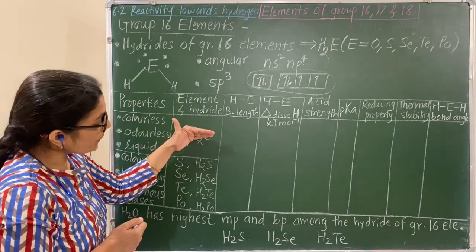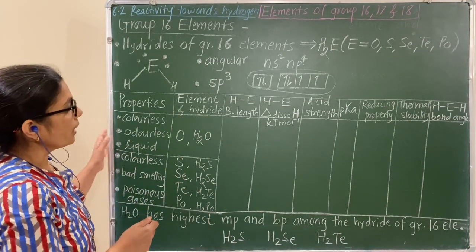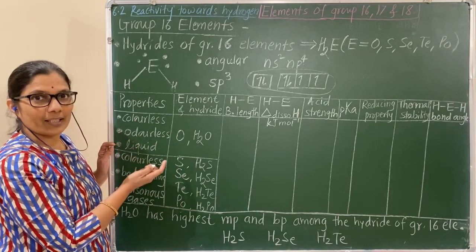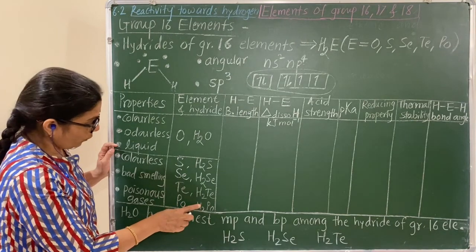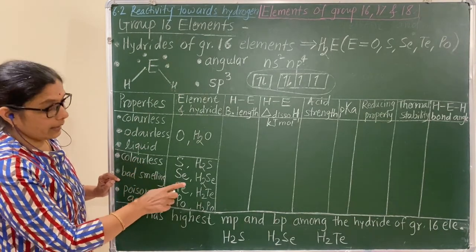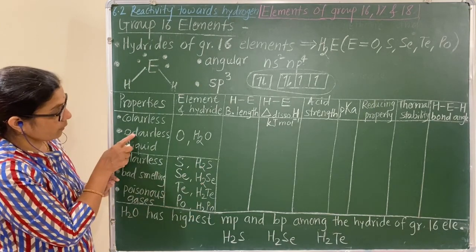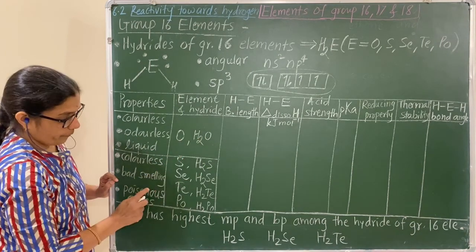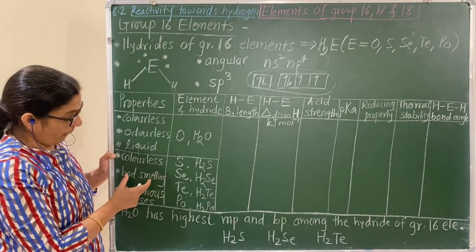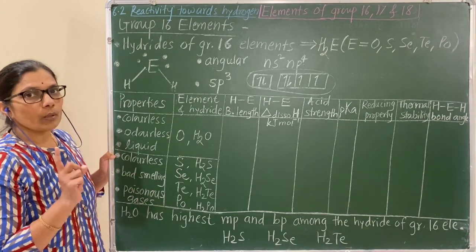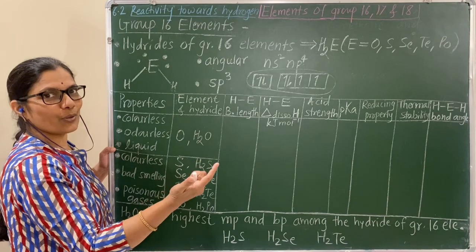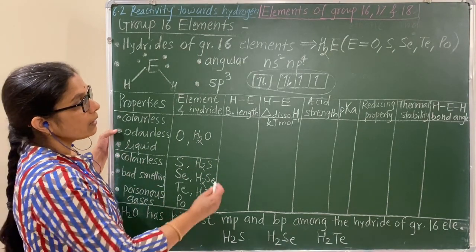Now consider different chemical properties of these hydrides of group 16 elements. H2O (water) is a colorless, odorless liquid. The remaining hydrides of this group are colorless but have a bad smell and are poisonous gases. H2S gas is available in the laboratory as a bad-smelling gas.